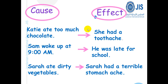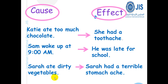The second example: Sam woke up at 9 a.m. So, what happened next? He was late for school. The third example: Sarah ate dirty vegetables. So, what happened next? Sarah had a terrible stomach ache.